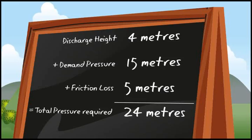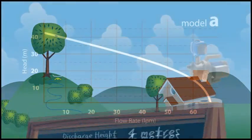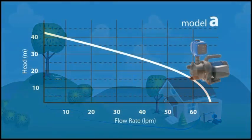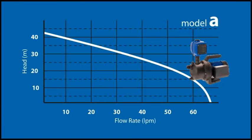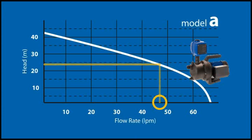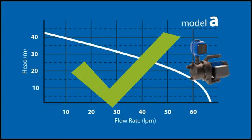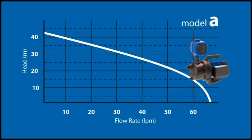Let's go back to the pump curve for model A to see if changing the diameter of the pipe will make this model a viable option once more. This time, we need to find 24 metres on the head or vertical axis and run an imaginary line across the graph till you hit the pump curve. Draw a straight line from this point down to the horizontal axis. By increasing the diameter size of the pipe, model A can now produce both the pressure and flow rate to meet Aunty Flo's needs.